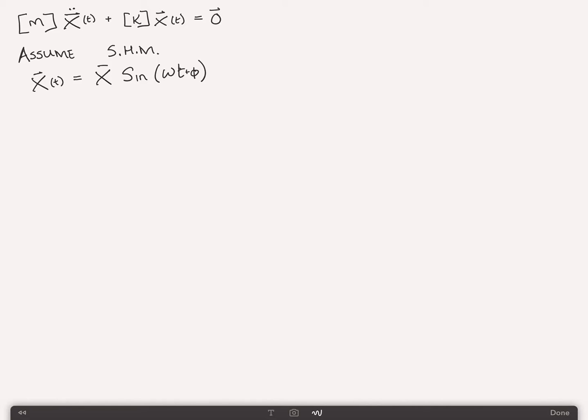If we differentiate this twice, let's give these numbers 1, 2, differentiating twice gives us x double dot of t is equal to minus omega squared x-bar sine of omega t plus phi, which can be simplified to minus omega squared x of t. So to differentiate x of t twice, we just multiply by minus omega squared, call that number 3.